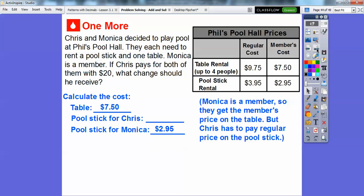The table is $7.50 and Monica's pool stick is $2.95. Remember, Monica's the member and Chris is not. So Chris has to pay regular on that pool stick. So that's $3.95. So let's add all those up and we get $14.40 right there. Now remember, we're looking for the change. So Chris gives them a 20. So we're going to subtract. So I know 20 minus 15 is 5. So it's going to be a little bit more than 5, $5.60 when we subtract those right there. So that's how much change he'll get back.